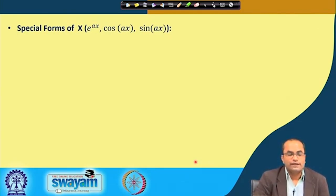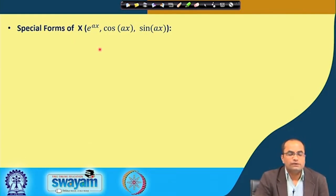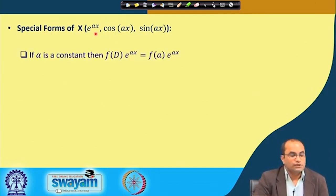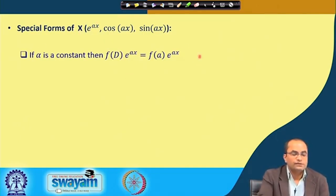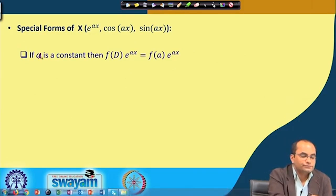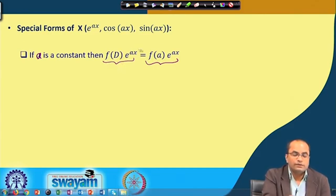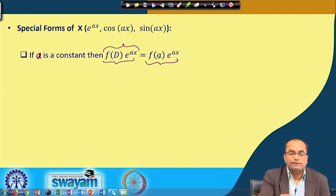Now we will talk about special forms of X — for instance e^(ax), cos(ax), sin(ax), etc. For these special cases, instead of using the integral formula, we can use direct evaluation techniques. The key result is: if a is a constant, then f(D)·e^(ax) = f(a)·e^(ax). This means when we apply f(D) to e^(ax), D is simply replaced by a.